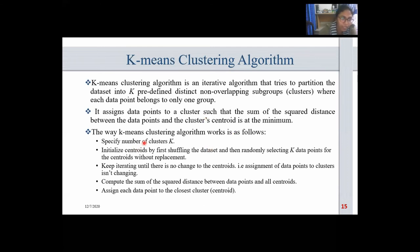The k-means clustering algorithm is an iterative algorithm that tries to partition the dataset into k predefined distinct non-overlapping subgroups, where each data point belongs to only one group. It assigns data points to a cluster such that the sum of the squared distance between data points and the cluster centroid is at the minimum. The steps are: specify the number of clusters k; initialize centroids by shuffling the dataset and randomly selecting k data points without replacement; keep iterating until there is no change to the centroids; compute the sum of squared distances between data points and all centroids; and assign each data point to the closest cluster.